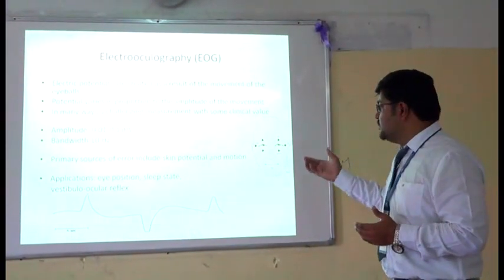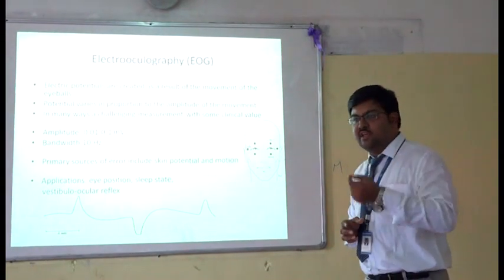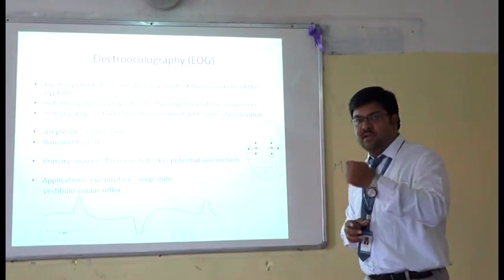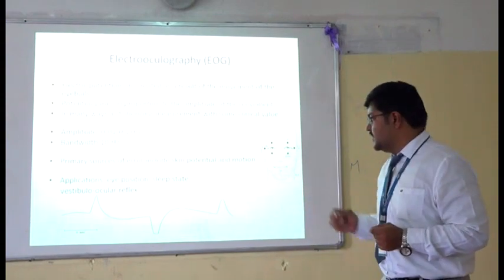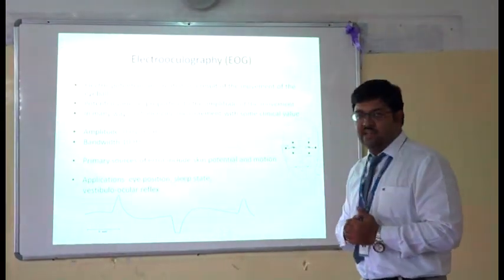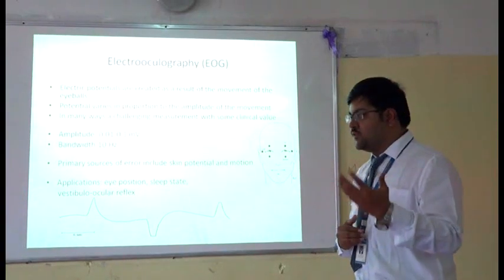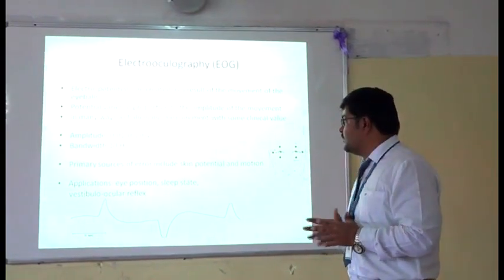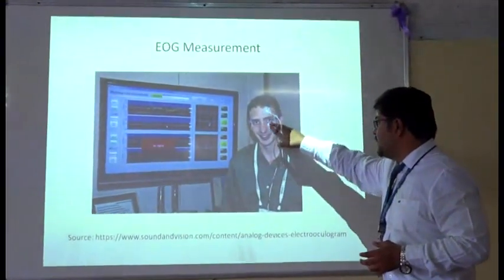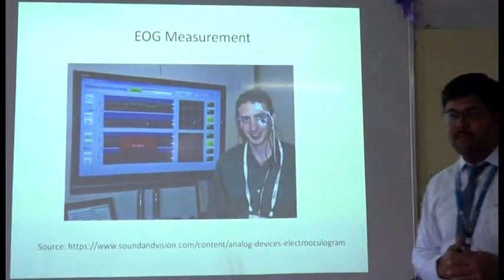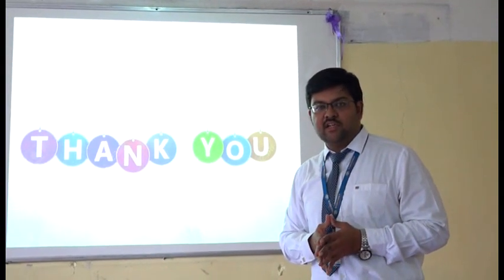From EOG we can determine the eye position of the patient, study sleep rate by observing how much the eyeball is moving during sleep, and assess vestibular ocular reflex — which is the sensory response to eyeball movement — to check whether the brain's response to eye movement is proper. EOG is collected by placing electrodes above and below the eye. In the next class we will discuss other physiological signals. Thank you.